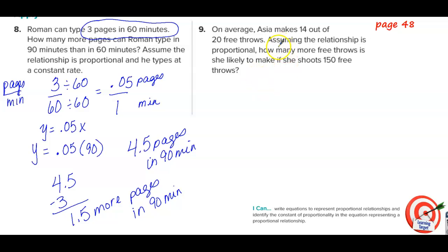Now we have Asia. On average, Asia makes 14 out of 20 free throws. Assuming the relationship is proportional, how many more free throws is she likely to make if she shoots 150 free throws? So it's makes over attempts. She makes 14 out of 20. Divide top and bottom by the bottom number to get a unit rate. And 14 divided by 20 is 0.7. So she makes 0.7 free throws every one attempt. That's about 70% free throw shooting. That's pretty good.